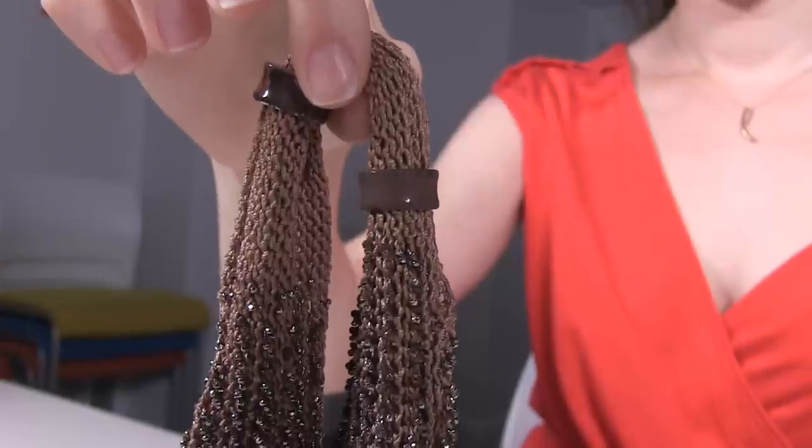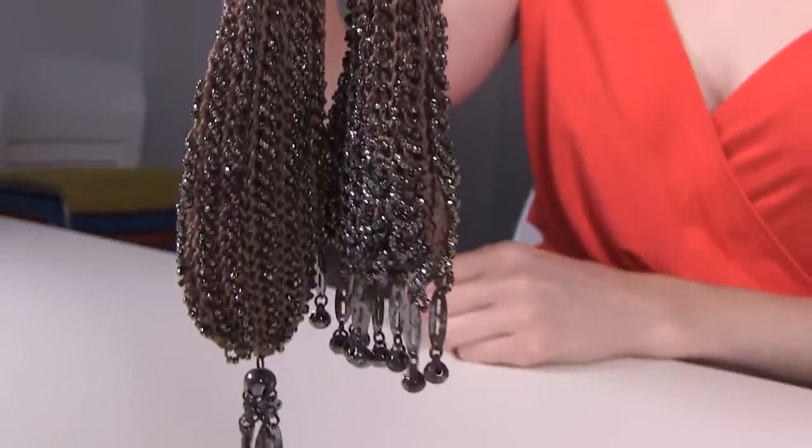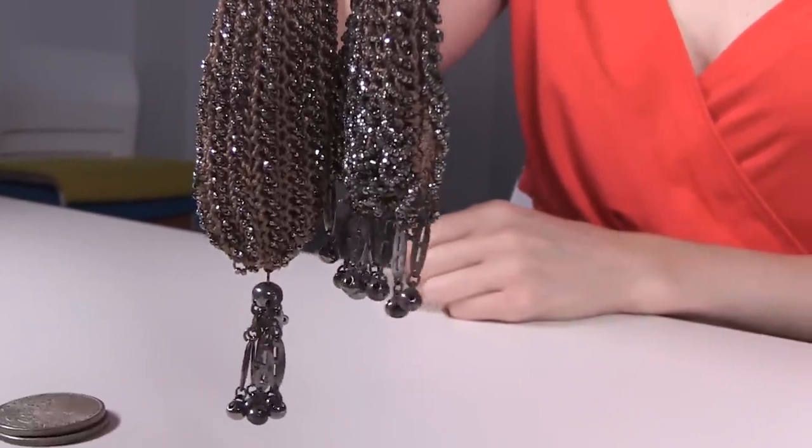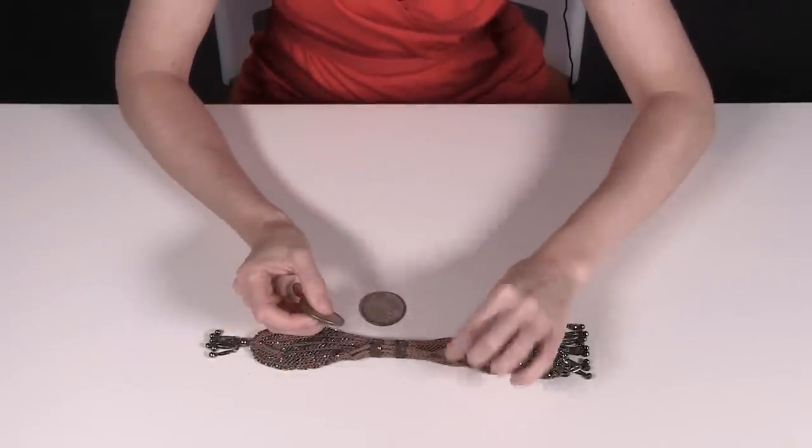This is a Meiser's Purse, American from the 1870s, made of silk with steel beads, tassels and rings. And as you can see, it has two rings over the slit opening.